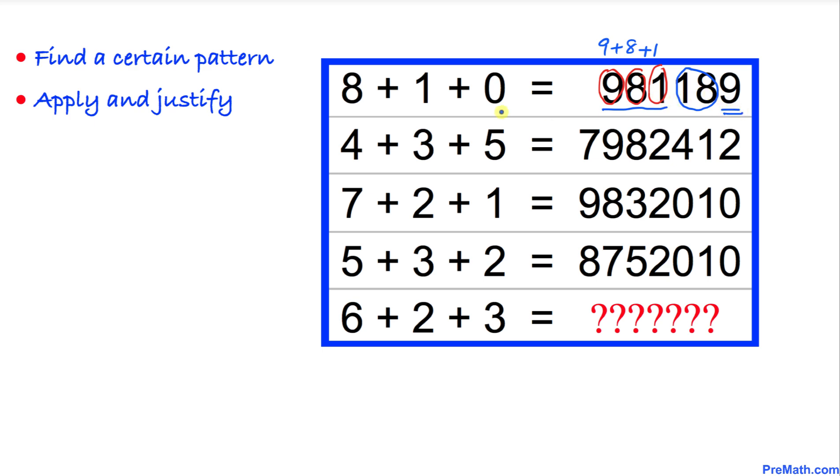And this final digit is just the addition of these three numbers on the left-hand side. Eight plus one plus zero is going to give us nine.